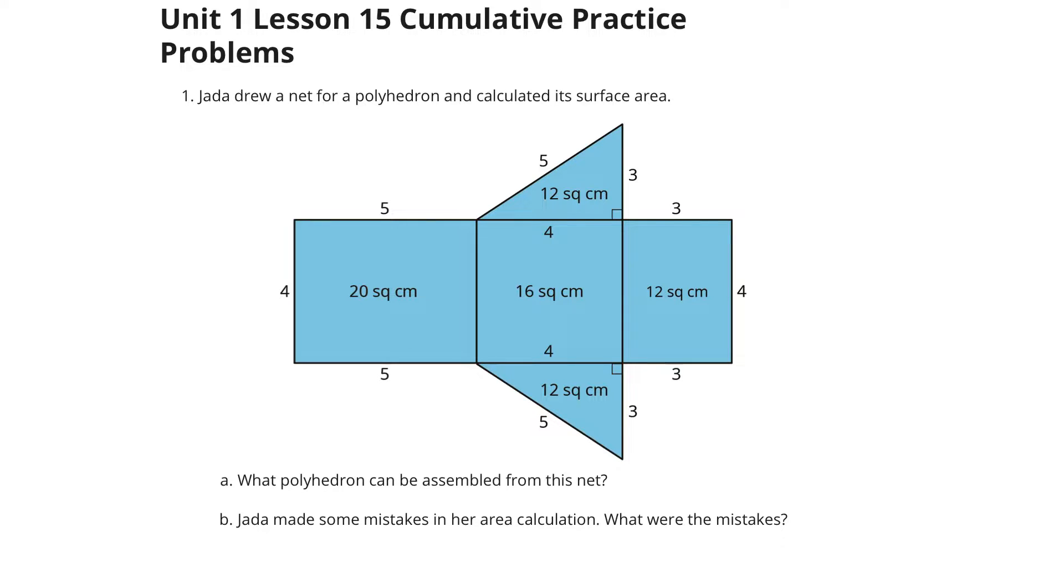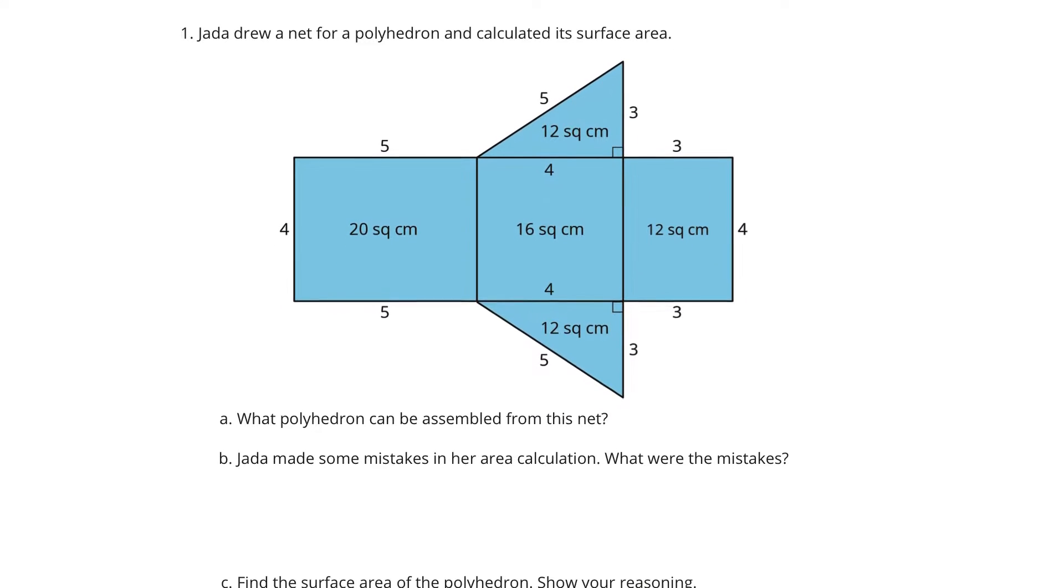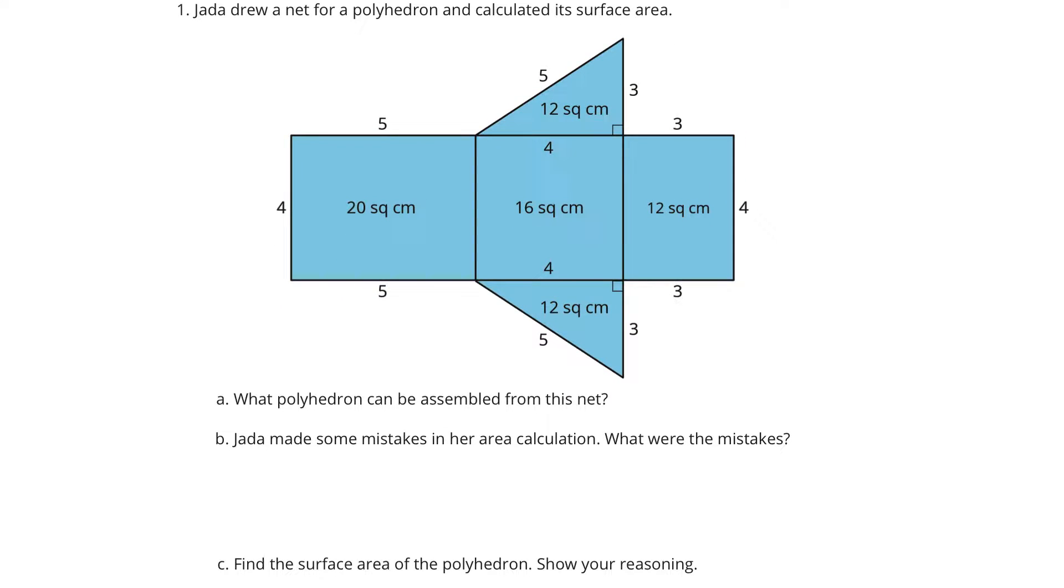In problem 1, Jada drew a net for a polyhedron and calculated its surface area. A, what polyhedron can be assembled from this net? And that, if you look, you have two identical triangular bases, and so this is going to be a triangular prism.